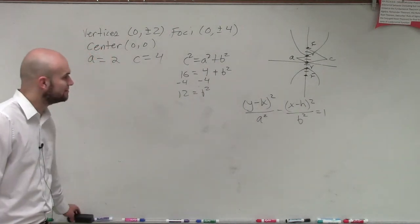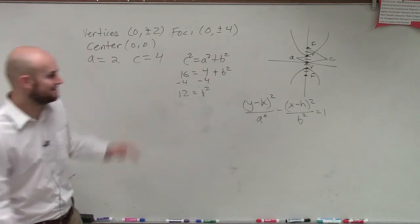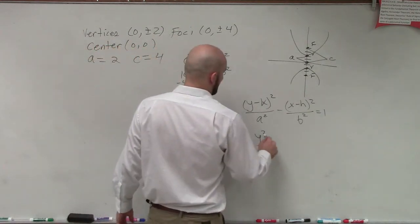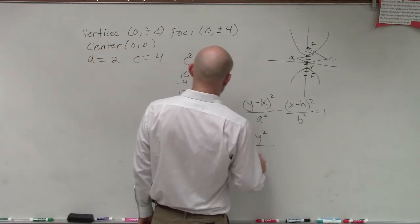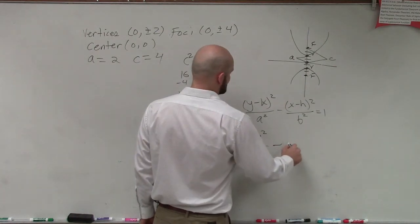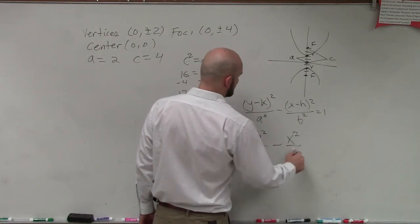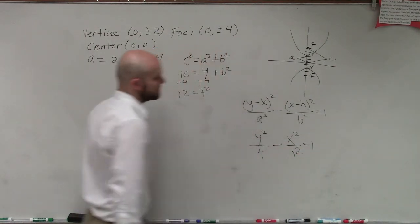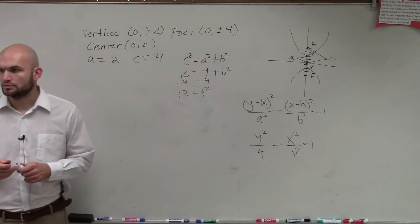So now, just plug in what we know. We don't have an h and a k, so our final answer is y² over a², which is 4, minus x² over 12 equals 1. So, that's it.